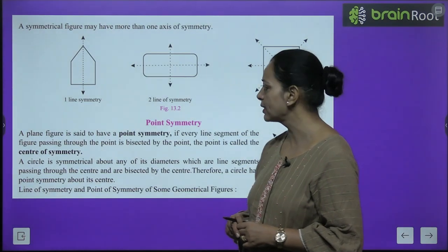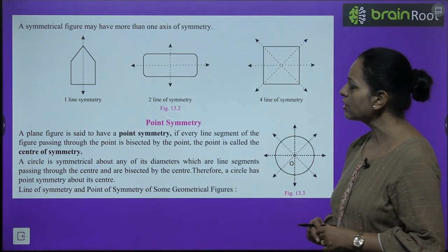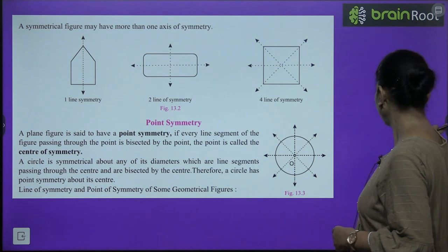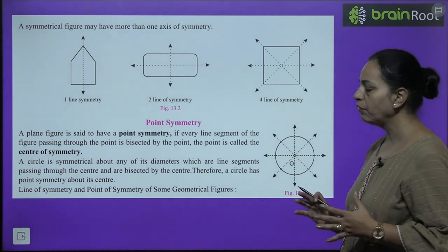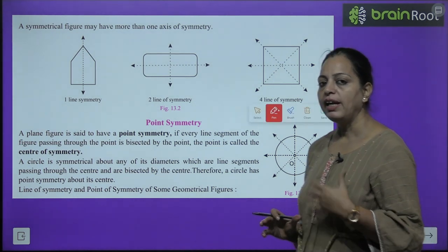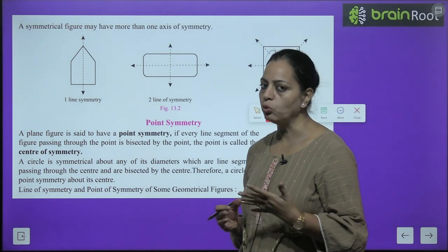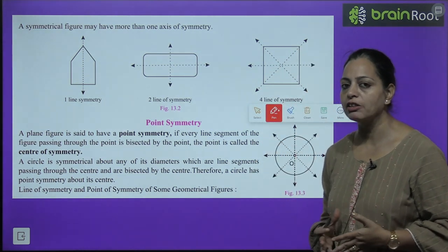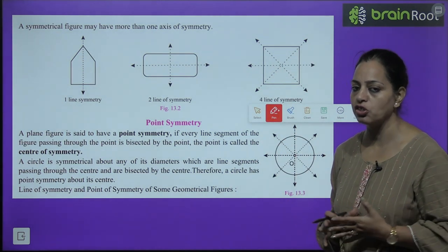Now look at these symmetrical figures. A symmetrical figure may have more than one axis of symmetry. In some figures there can be one line, two lines, or three lines of symmetry — it depends on the shape.